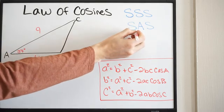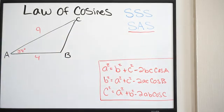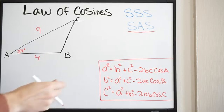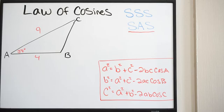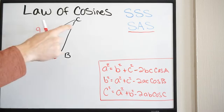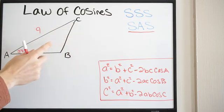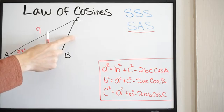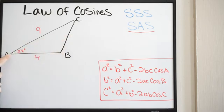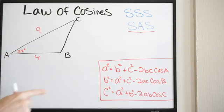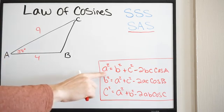So here is example two — we're dealing with side-angle-side, and here is our triangle to the left. Our equations for the law of cosines are in the right-hand corner. The first step is to find the missing side, which is side A. I know this is side A because it's opposite to angle A, so we're going to solve for side A using this first equation.